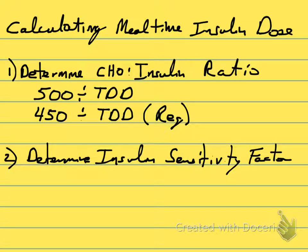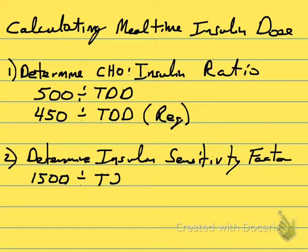The next component is the insulin sensitivity factor, and the rule you need to keep in mind is the 1500 rule. It says: take 1500 and divide that by your total daily dose of insulin. This is going to tell you how many milligrams per deciliter of glucose in your blood each unit of insulin is going to cover.